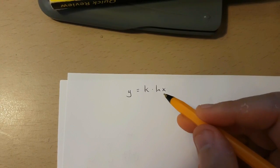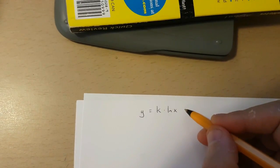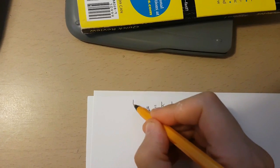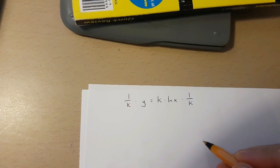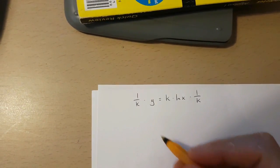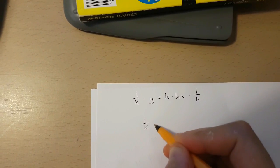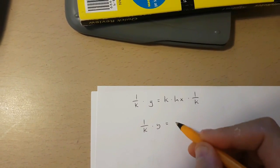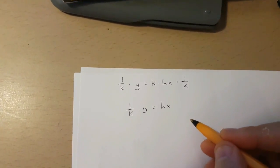Now the first thing I have to do over here is multiply both sides of this equation by 1 over k. This means I'll get 1 over k times y is equal to ln x.